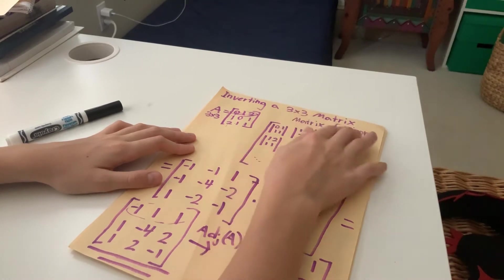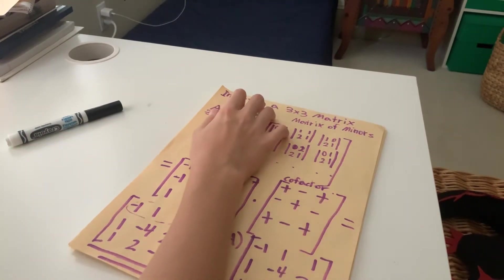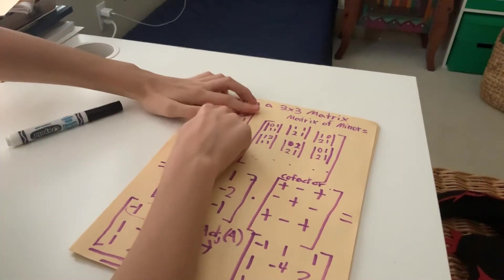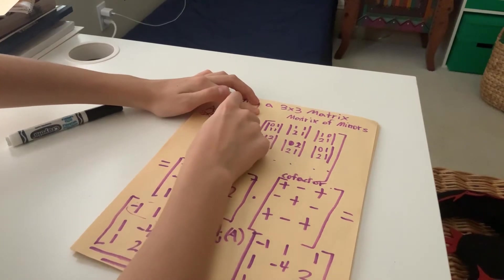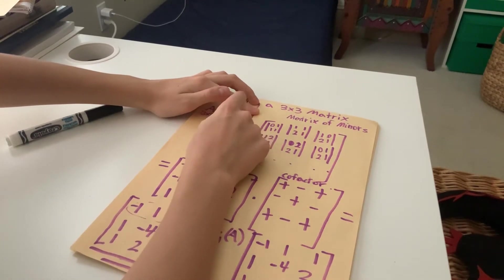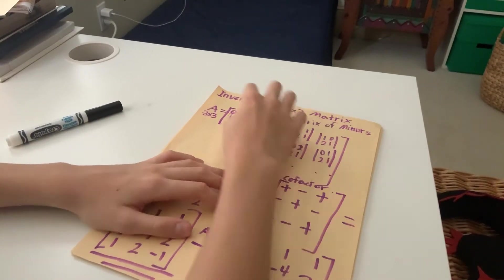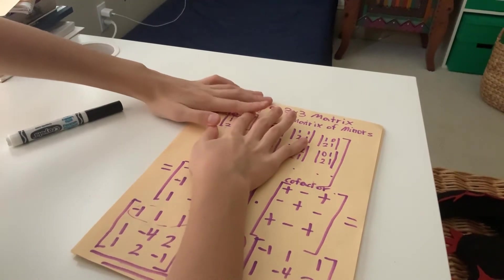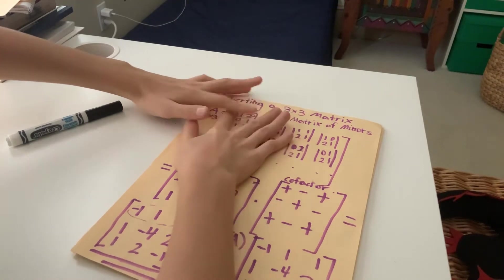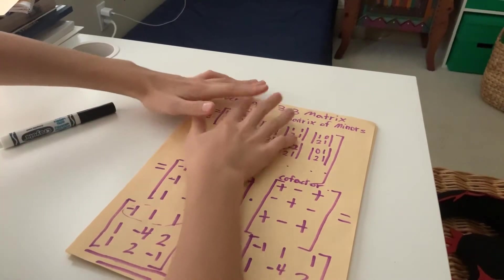And then what happens here is you essentially, the next process here is called the matrix of minors, where essentially whatever term you're on, let's say 0, you actually cross out that term and the remaining matrix, the remaining 2x2 matrix, you take the determinant of that, which is just A multiplied by D minus B multiplied by C. So that's the determinant. So just like this, you write out the determinant. So you go along this, you go along the matrix this way. So that's crossed out, you cross out that term's row and column. So it's like this. You get the idea.